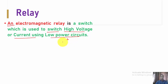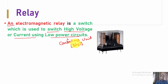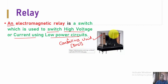The low-power circuit basically works as a controlling unit. In our application, this controlling unit may be an 8051-based system. This shows the typical relay model, which has different terminals.